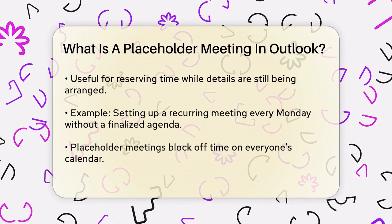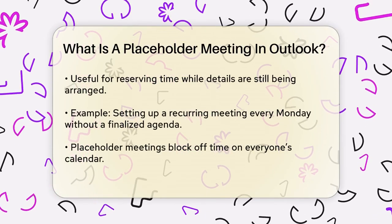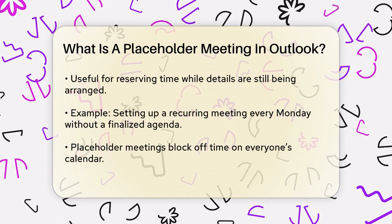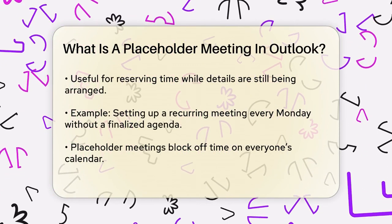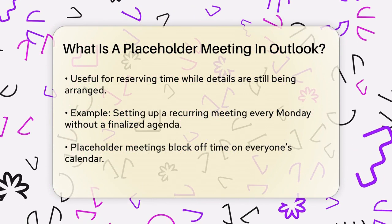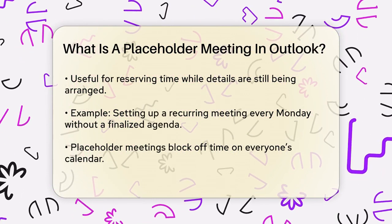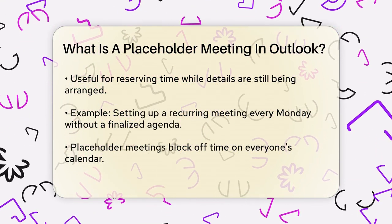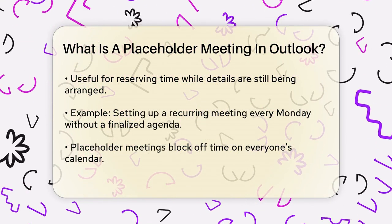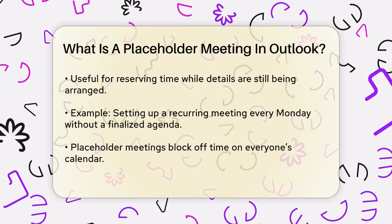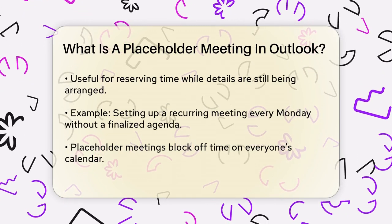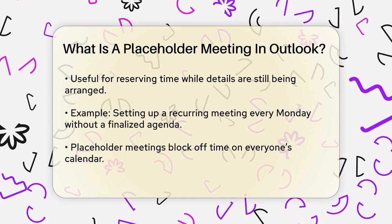Imagine you're planning a meeting but you're still figuring out who will be there or what will be discussed. To ensure that the time slot isn't taken by another meeting, you can create a placeholder. This way, you reserve the time on everyone's calendar without committing to all the specifics just yet.